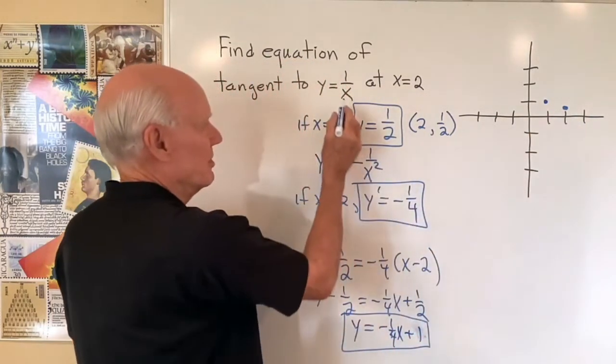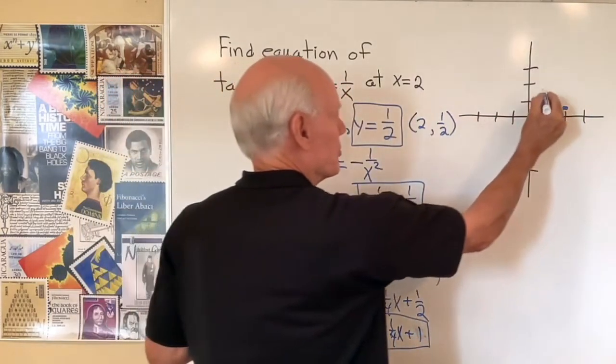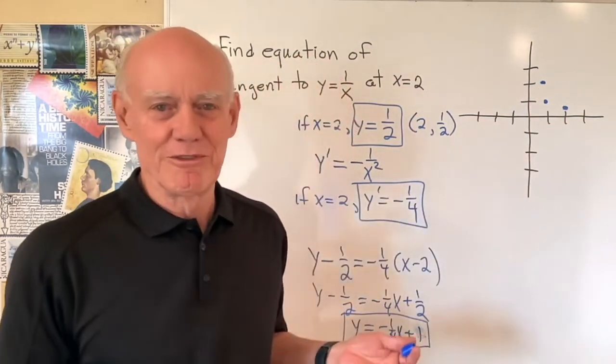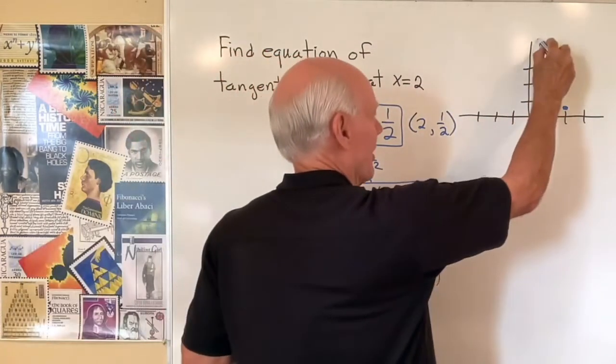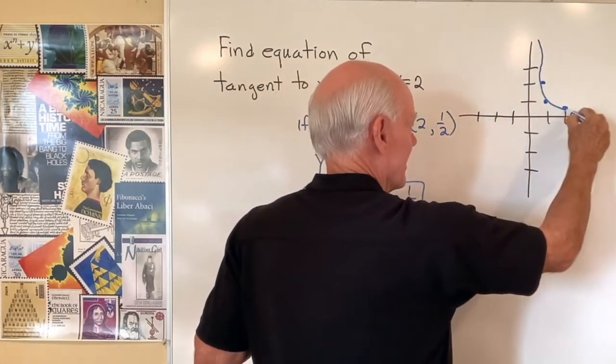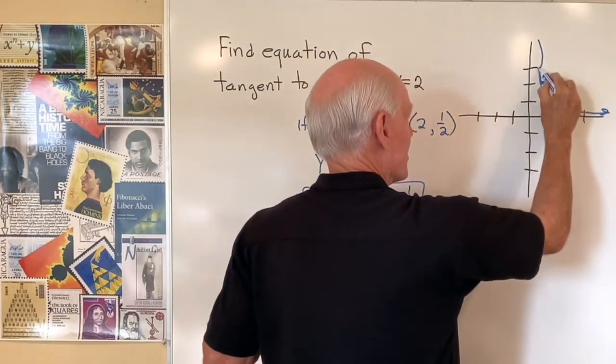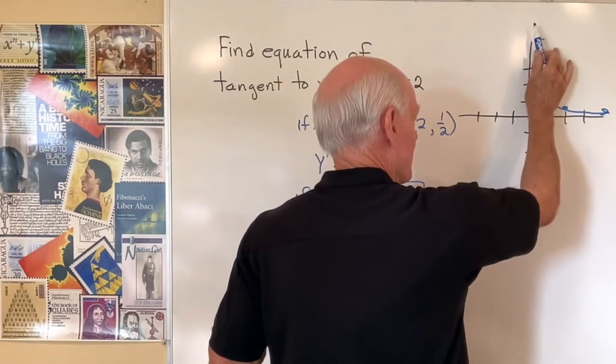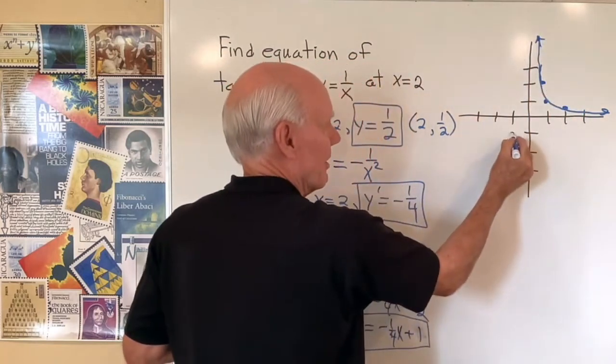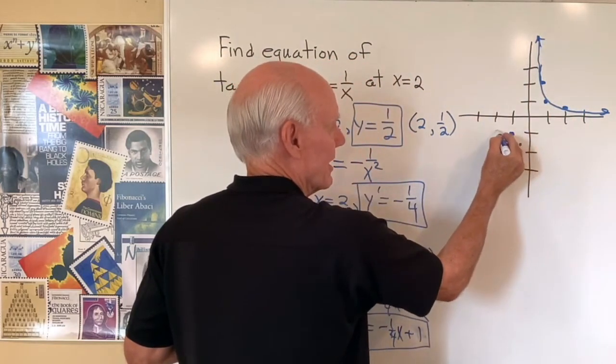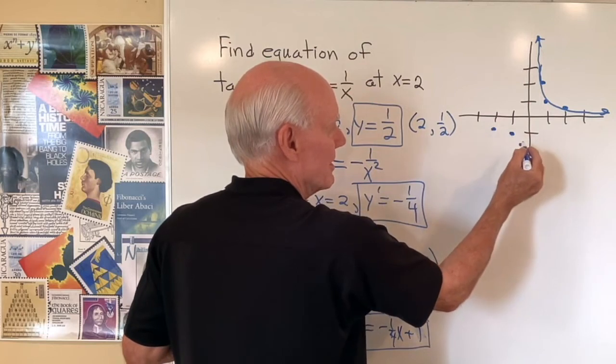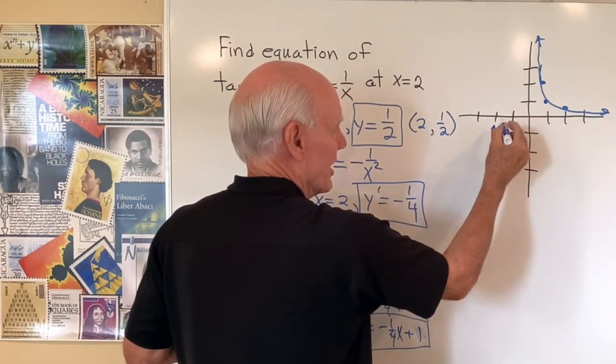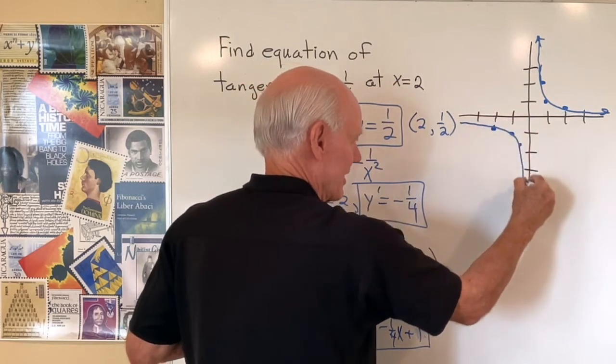And when x is equal to one half, y is equal to two. But you know what the graph of y equals one over x looks like. So it's going to come down like this and approach the x axis and the y axis asymptotically. Same thing down here. So I'll get these points. When x is equal to two, y is equal to negative one half. Okay, so it looks like this.